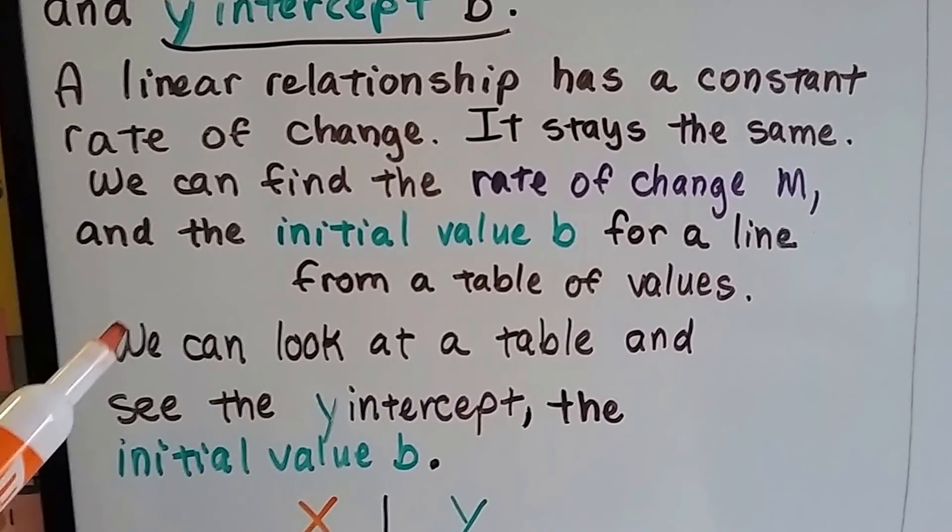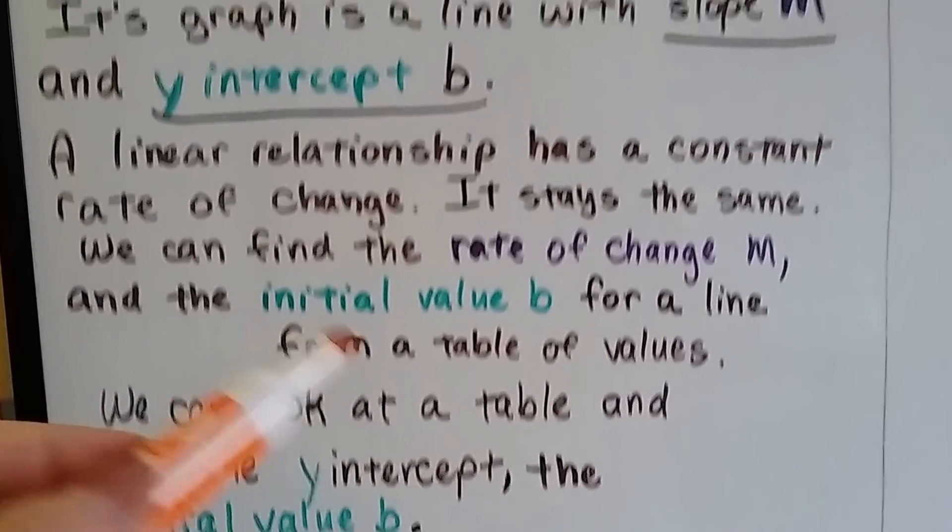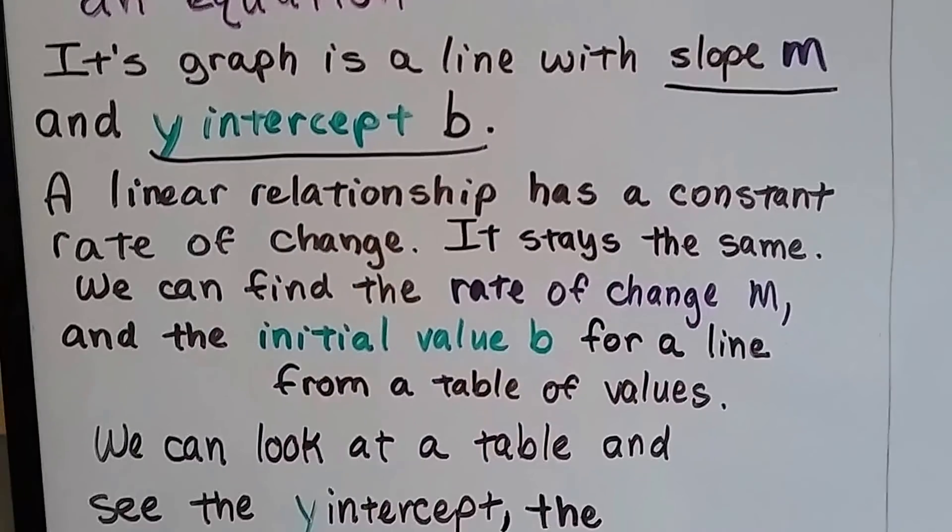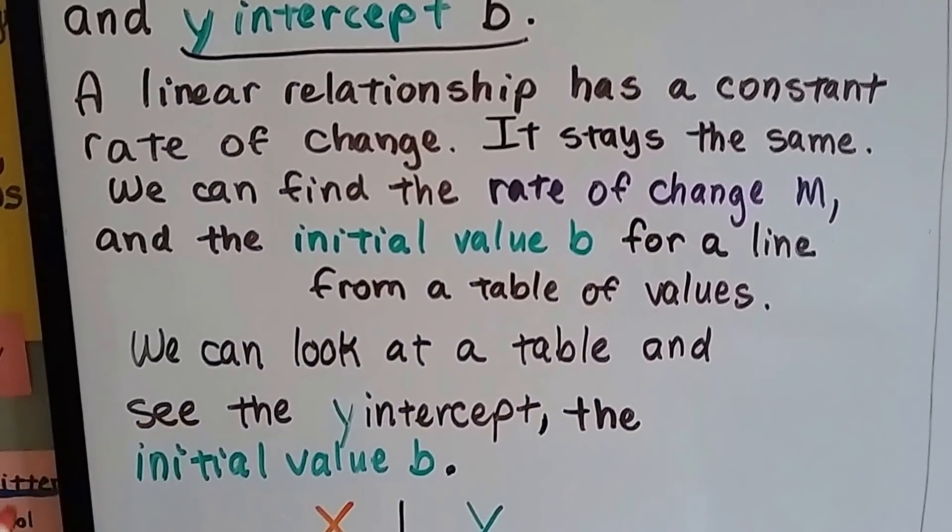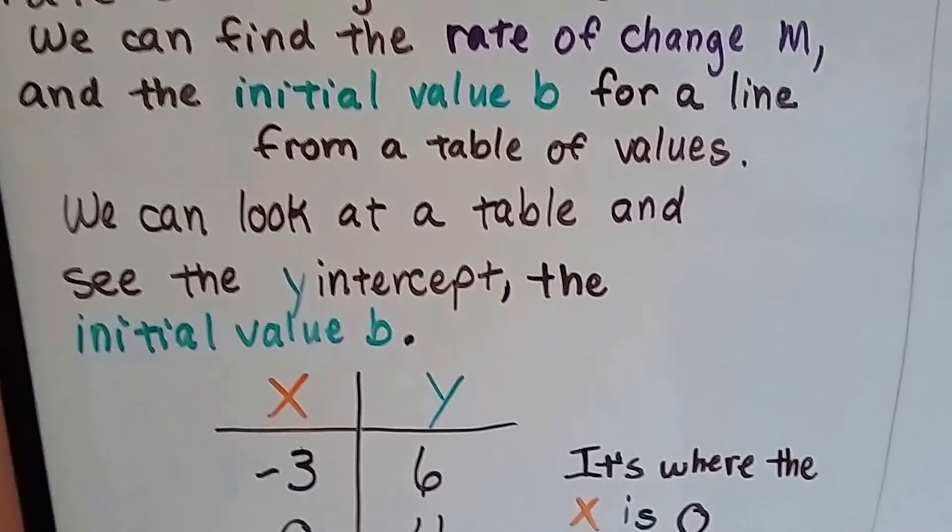And we can find the rate of change m, that slope, and that initial value b, which is also the y-intercept. It's the same thing. We can find it for a line from a table of values. And we can look at a table and see the y-intercept, that initial value b.